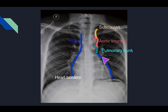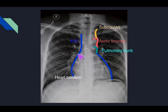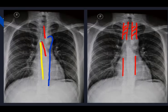The left heart border is made by the left atrium and the left ventricle. The right heart border is made only by the right atrium, as the right ventricle is located more anteriorly. The right atrium continues to form the superior vena cava, and the junction between these two is called the cavoatrial junction.